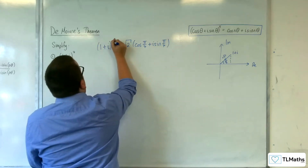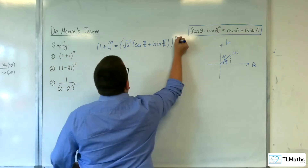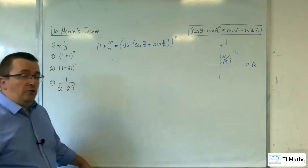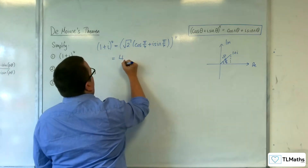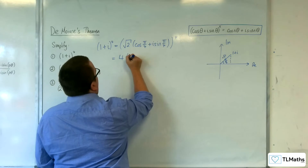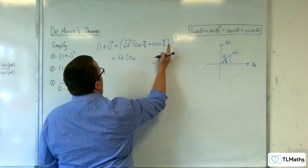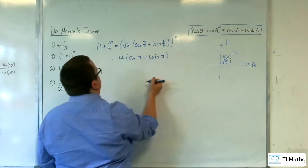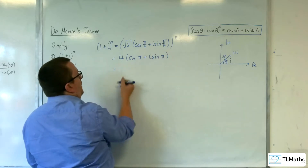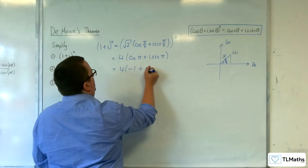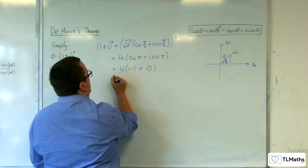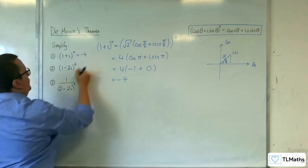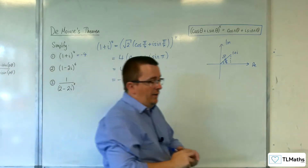If we raise that to the power of four, we get (√2)^4 × (cos(π/4 × 4) + i·sin(π/4 × 4)), which gives us 4 × (cos(π) + i·sin(π)). Cosine of π is −1 and sine of π is 0, so we just get −4.